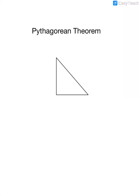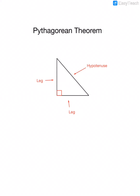Besides having a right angle, right triangles have a few special parts. The side that's across from the right angle is called the hypotenuse. This is the longest side of the triangle. The other two sides are called the legs. We don't differentiate between either of the legs — they're just legs. The only one that's special is the one that's across from the right angle, and that's called the hypotenuse.